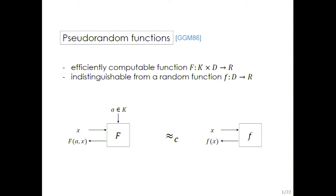Pseudorandom functions were introduced by Goldreich, Goldwasser, and Micali in 1986, and this is one of the most fundamental primitives in cryptography, and probably also one of the simplest. A pseudorandom function is simply a keyed function from a domain D to a range R, which is efficiently computable and indistinguishable from a random function from D to R.